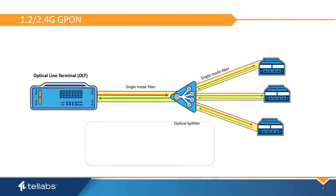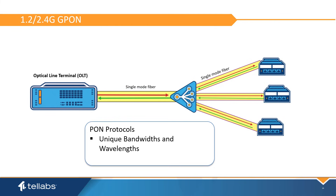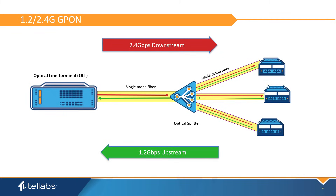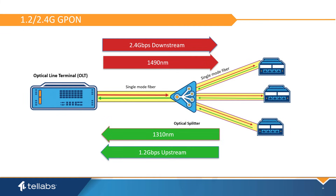PON protocols are unique in two ways: bandwidth and wavelength. The most common PON protocol is Gigabit PON, or GPON. GPON was developed originally to support Fiber to the Home. It supports 2.4Gb downstream on the PON and 1.2Gb upstream. The wavelengths used are 1490nm downstream and 1310nm upstream. To support the GPON interface, a dedicated GPON transceiver is used at the OLT, along with the GPON ONT.